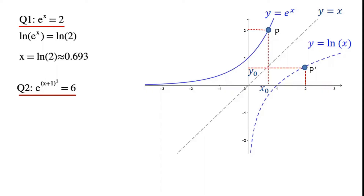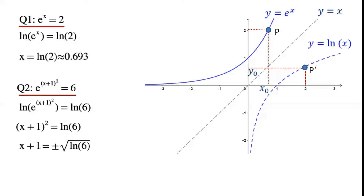Next, we'll solve e to the power of (x+1)² equals 6. We take ln on both sides of the equation. The left-hand side becomes (x+1)² times ln(e), and since ln(e) equals 1, this simplifies to (x+1)². So x plus 1 equals plus or minus the square root of ln(6). Rearranging, we get x equals minus 1 plus or minus the square root of ln(6).